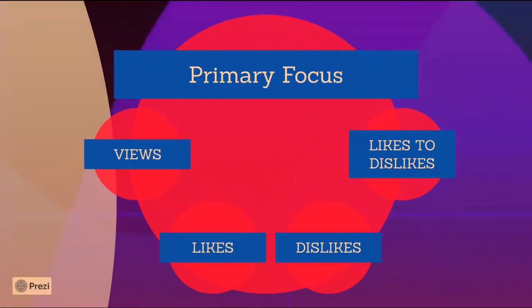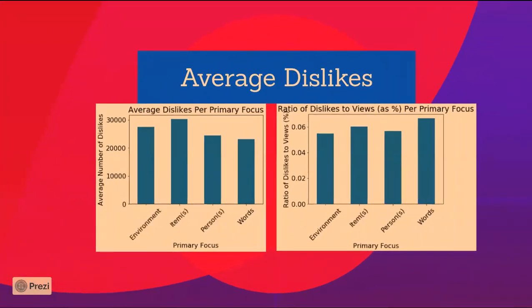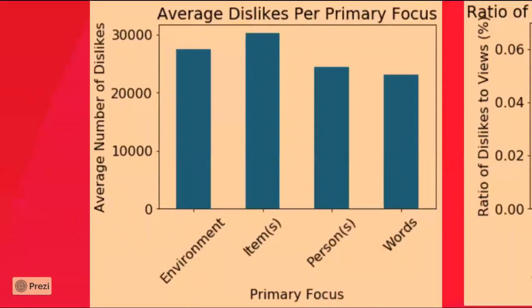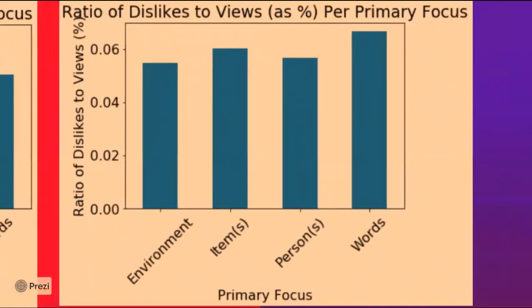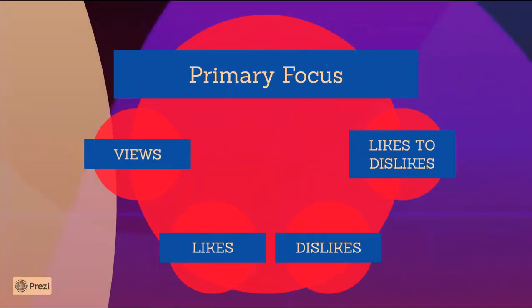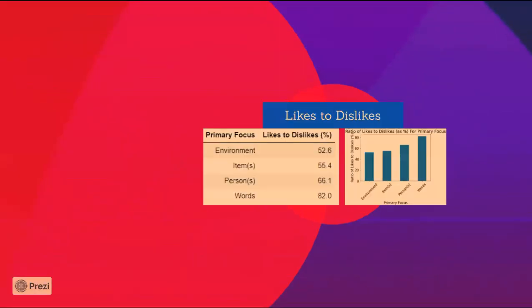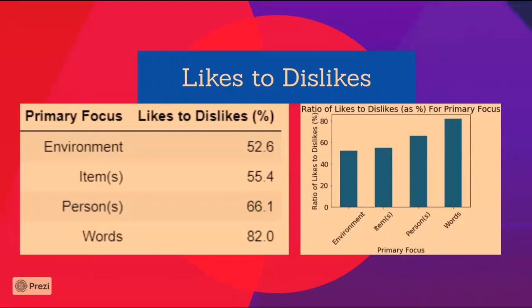I then plotted the average dislikes per primary focus. Thumbnails with items as a primary focus have the highest average number of dislikes, while thumbnails with words have the lowest average number of dislikes. When plotting the ratio of dislikes to views, words has the biggest ratio and environment has the lowest. Finally, the ratio of likes to dislikes also shows words has the highest ratio. So if you're looking to optimize for likes and limit dislikes, definitely consider having words as a primary focus of your thumbnail.